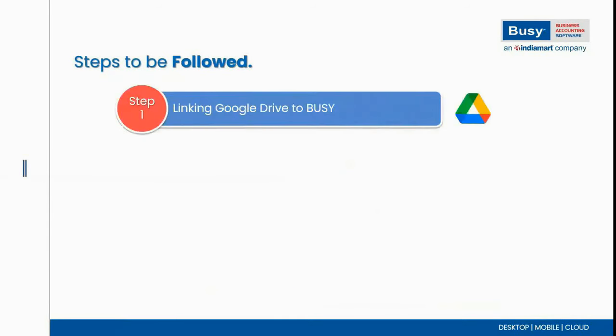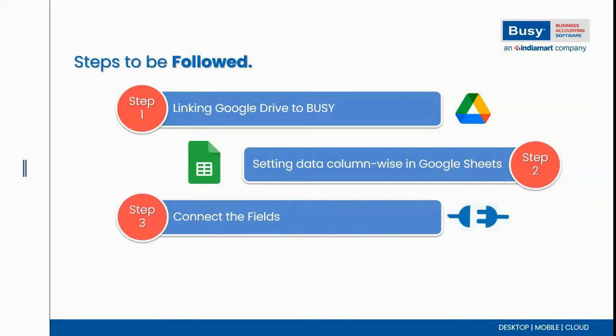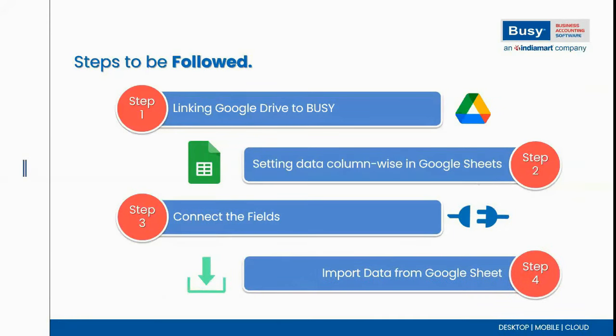Let's have a quick look at the steps. First, you have to link Google Drive with Busy — you have to mention your Gmail ID in the business configuration options, through which your Google Drive will get connected with Busy. Second, you have to set your data column-wise, meaning each field you are going to import should be in a separate column in Google Sheet. Third, you have to connect or map your Busy data field with the Google Sheet column. The fourth step is to import data by putting the Google Sheet URL link.